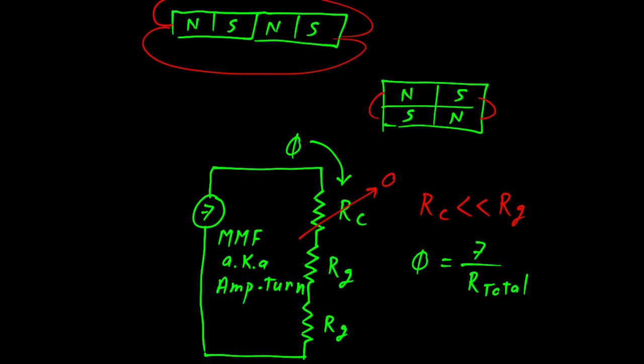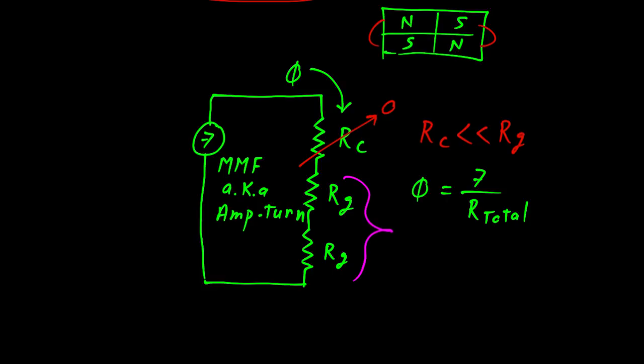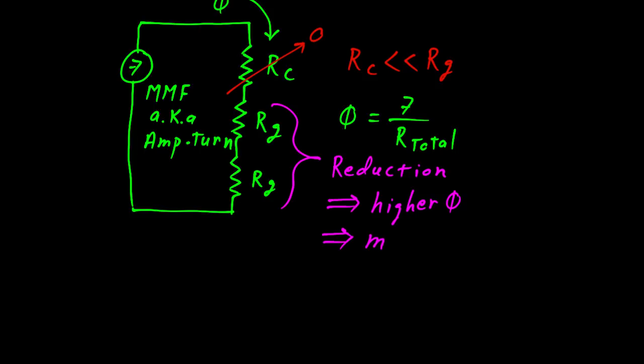When our rotor moves, the reluctance in the air gap is reduced. If the reluctance is reduced, then the flux must increase. And when that happens, we can say that more energy has been stored in the magnetic field. The units for flux, or phi, is Webers. And a Weber is a joule per ampere. And a joule, of course, is a measure of energy. All things being equal, if you have more flux lines, you have more energy stored in the system.